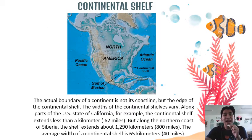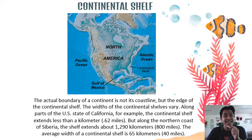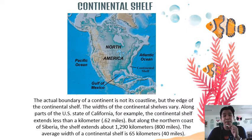The actual boundary of a continent is not its coastline, but the edge of the continental shelf. The width of continental shelves varies. Along parts of the U.S. state of California, for example, the continental shelf extends less than a kilometer or 0.62 miles. But along the northern coast of Siberia, the shelf extends about 1,290 kilometers or 800 miles. The average width of the continental shelf is 65 kilometers or 40 miles.